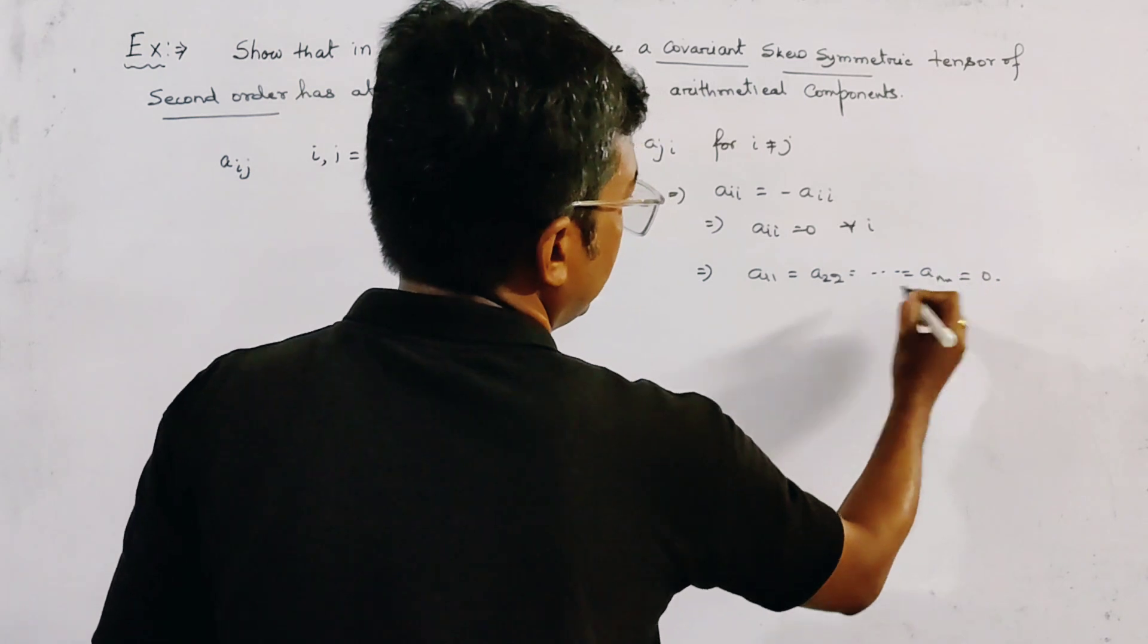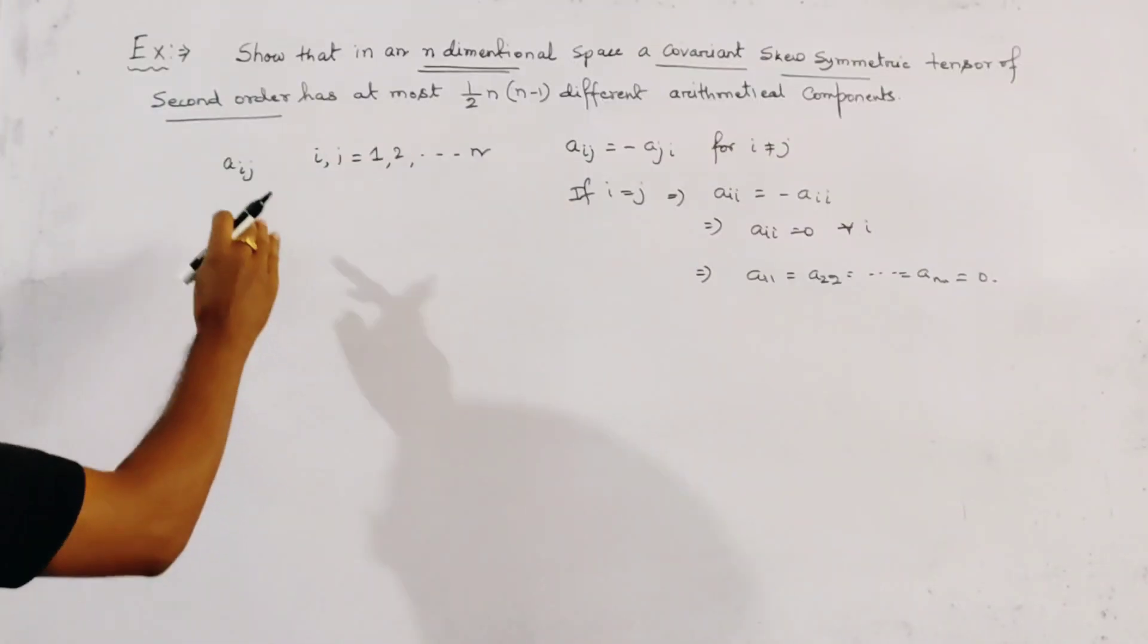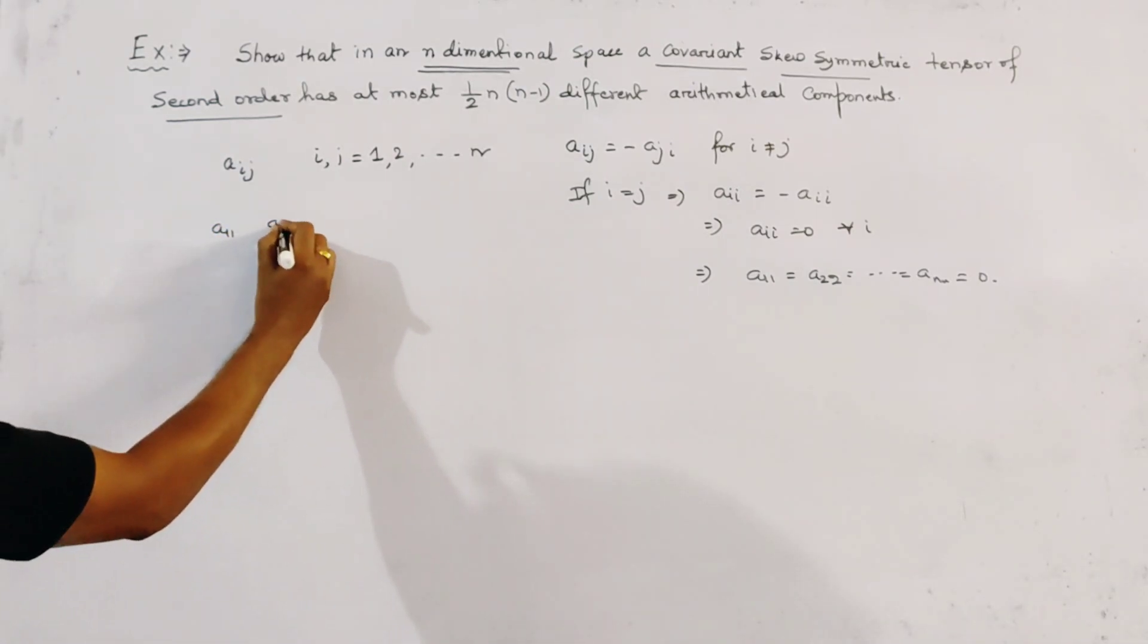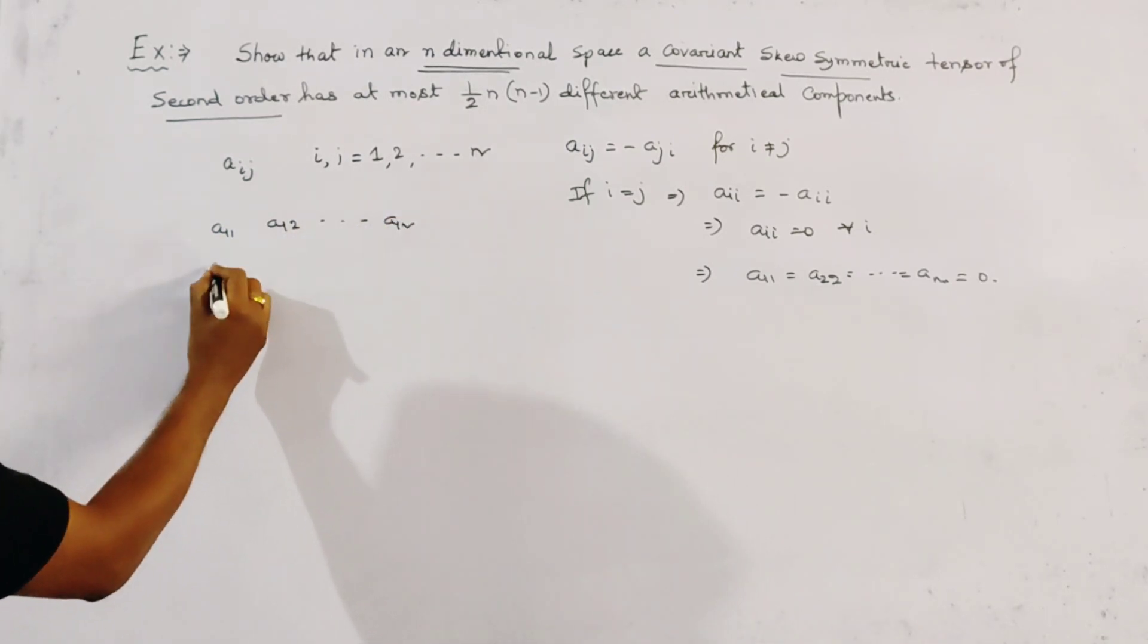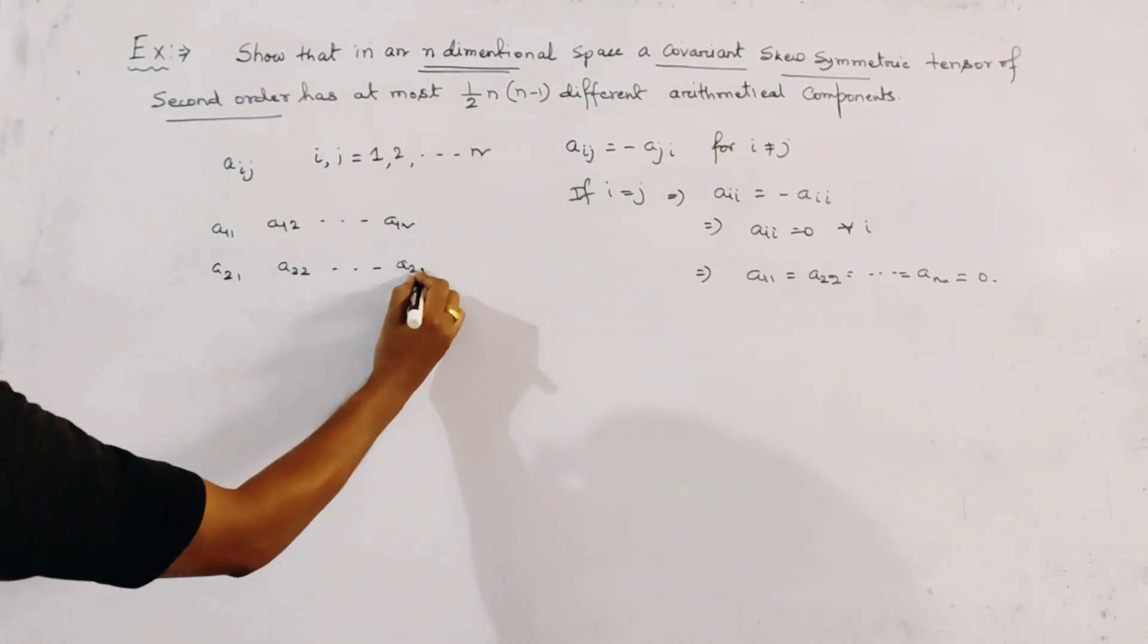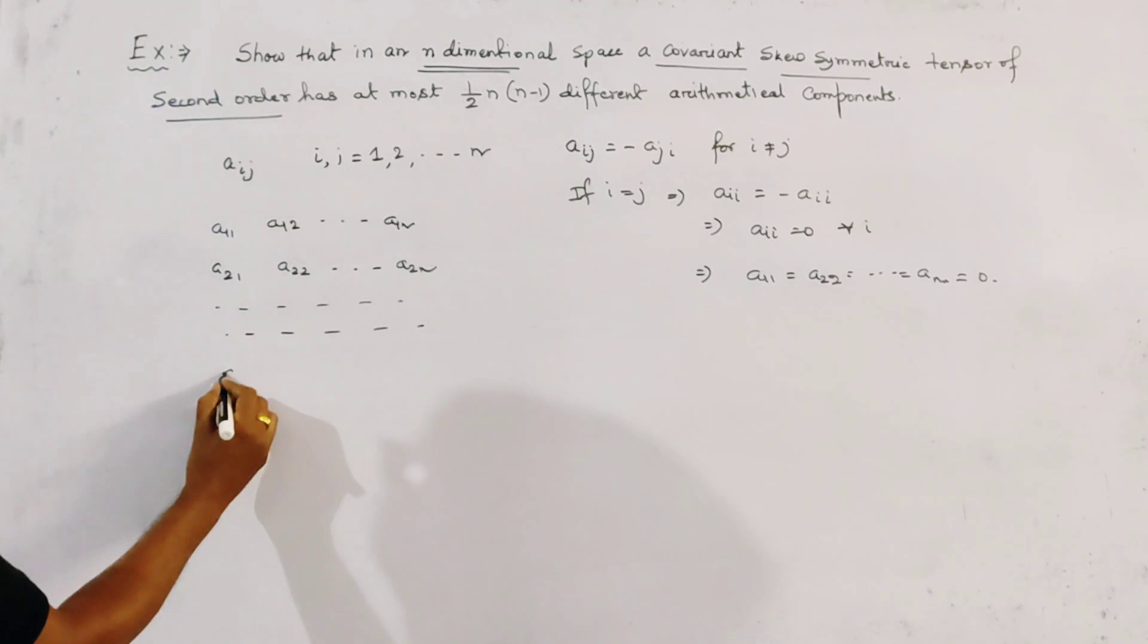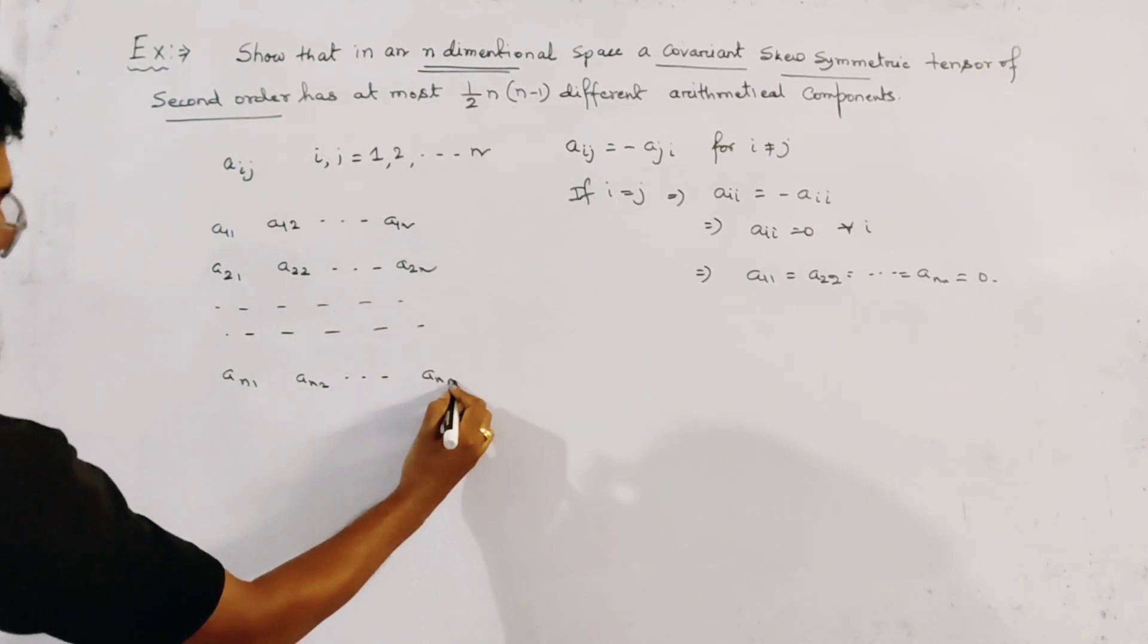All the components of this type are 0. Now we write all the components in a matrix form of a_ij. As this is a_11, a_12 to a_1n. In the second row we write a_21, a_22 to a_2n. And in the nth row we write a_n1, a_n2 to a_nn.